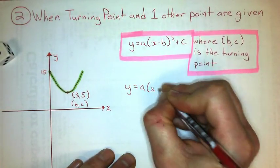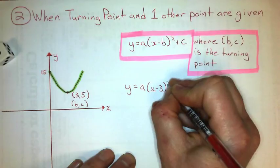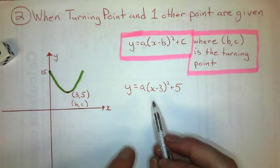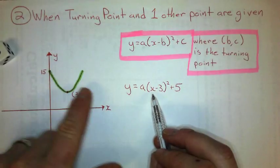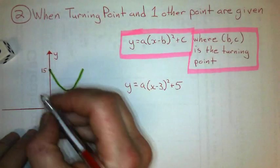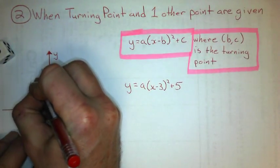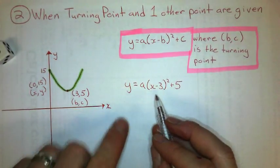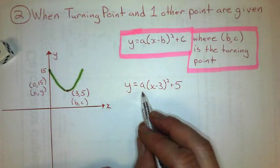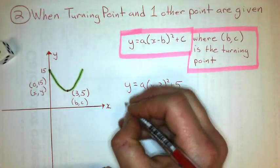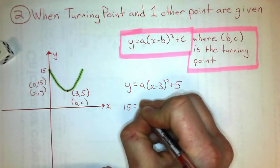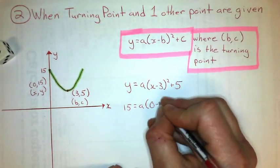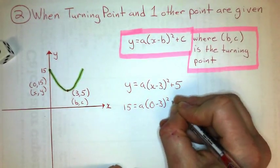This is the formula we use when given a turning point and some other point on the curve. We substitute the vertex values in first. The vertex here is (3, 5), so we get y equals a times x minus 3, squared, plus 5. Then I substitute a value for x and y — that coordinate is the y-intercept (0, 15) — into the equation to solve for a.